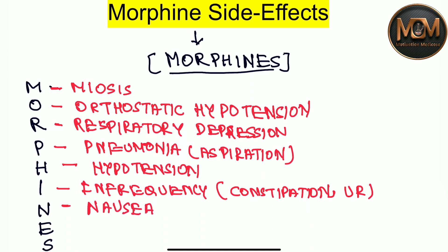From the N we have nausea. From the E we have emesis. And from the S — the last letter — we have sedation.